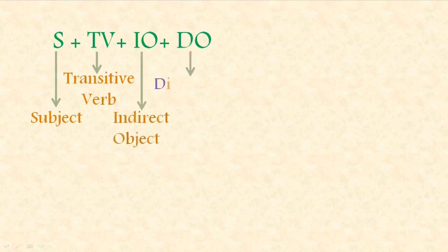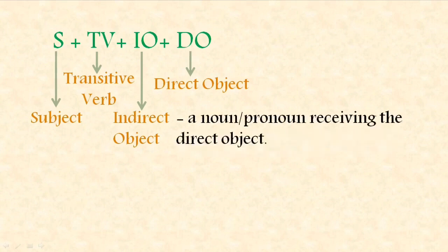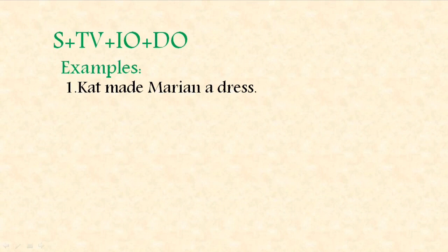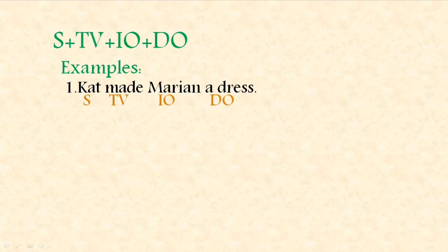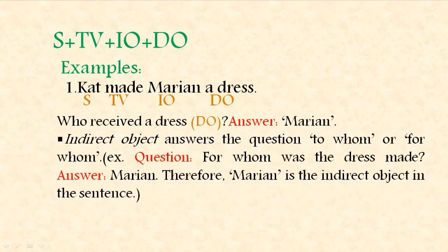The third pattern is STVIODO, or subject plus transitive verb plus indirect object plus direct object. An indirect object is a noun or a pronoun receiving the direct object. Example: 'Cat made Marian a dress' — the subject is 'cat,' the transitive verb is 'made,' the indirect object is 'Marian,' and the direct object is 'dress.' The indirect object answers the question 'to whom' or 'for whom' — for whom was the dress made? For Marian. Therefore Marian is the indirect object.